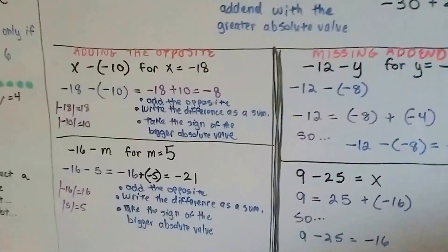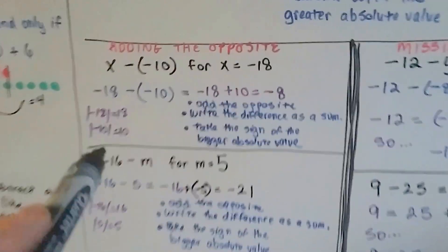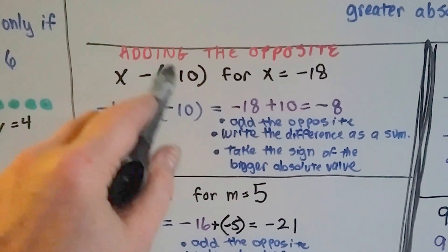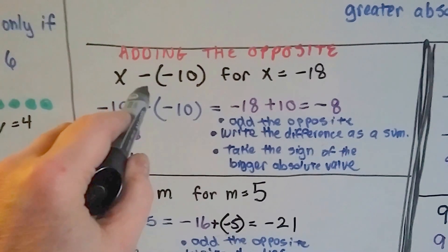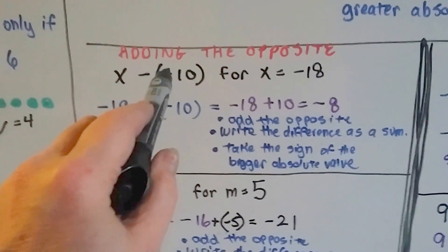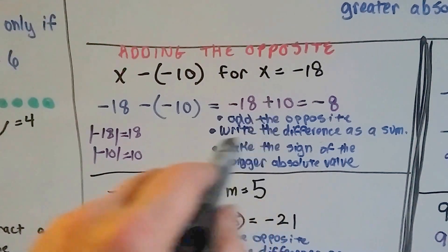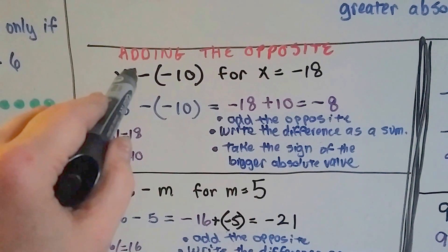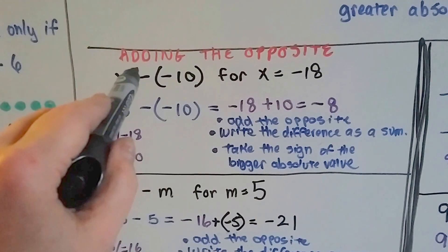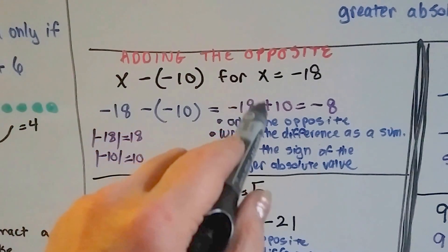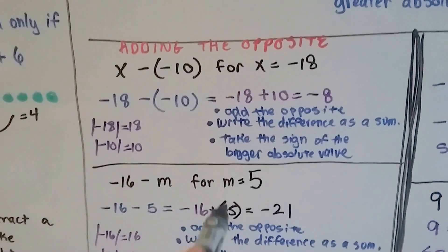For adding the opposite: whatever it says to do, we do the opposite. If it says to take away a negative, then we add a positive. If it says to take away a positive, then we add a negative.